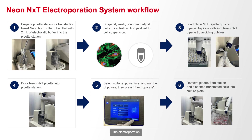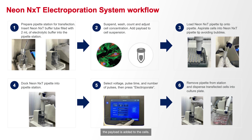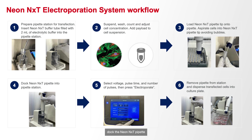The electroporation protocol with the NEONNEXT electroporation system is very simple. We start by preparing the pipette station for transfection by adding the electrolytic buffer. After adjusting the cell count and concentration, the payload is added to the cells. Then we simply aspirate the cells with the payload into the NEONNEXT pipette. We then dock the NEONNEXT pipette into the pipette station, and at this time we select the desired voltage, pulse time, and pulse number on the NEONNEXT instrument screen and simply press electroporate.